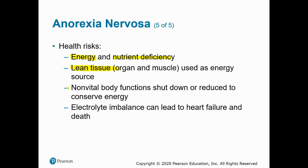Amenorrhea is an example of a non-vital body function shutting down — the reproductive cycle isn't needed for the person's survival — so the body conserves energy by shutting down non-vital functions first. Electrolyte imbalances also occur, which can cause heart failure and potentially death.